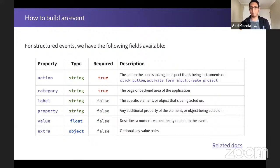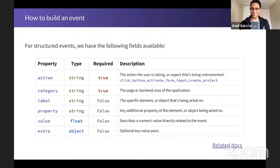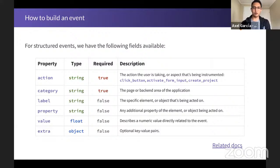Then we have category, which is automatically provided on the front end. On the back end, it is usually the name of the class. We have optional fields like label — an identifier of the element — and property, which is any additional property we want to add to the event. Value is any arbitrary number related to the event; property and value have no direct relationship. Finally, we have an extra object — not part of the structured event schema but added afterwards — that allows us to store any kind of key-value pairs to extend any event with several pieces of data.